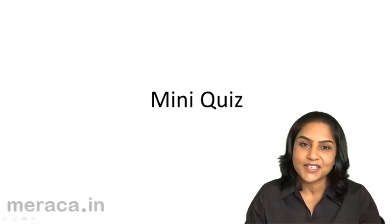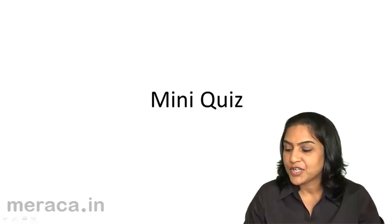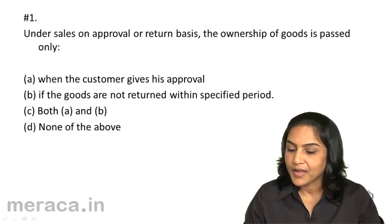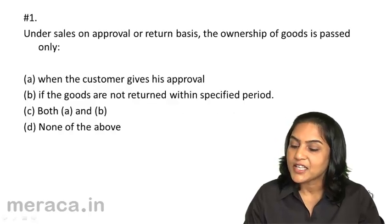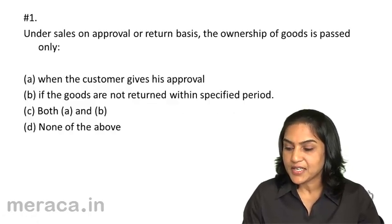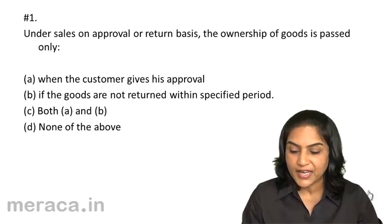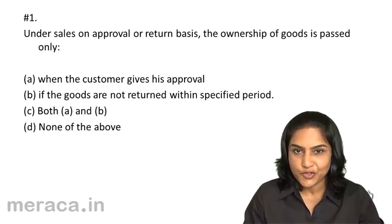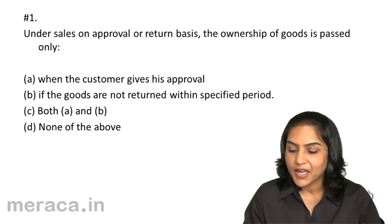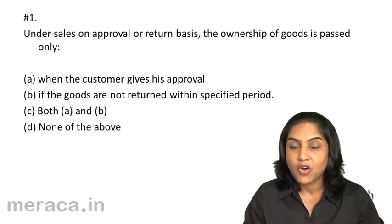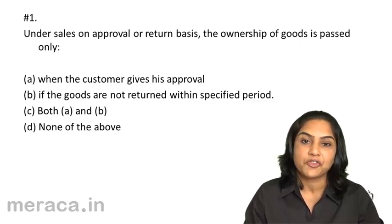A short mini quiz to test our understanding this far. Under sales on approval or return basis, the ownership of goods is passed only: A, when the customer gives his approval; B, if the goods are not returned within a specified period; C, both A and B; or D, none of the above.